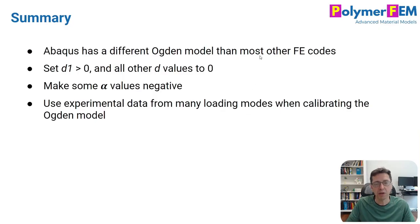To summarize, Abacus is different than the other finite element solvers in how it implements the Ogden model. Typically, I only have one d parameter to be non-zero. That's d1 and that one I set to be zero, simply because that's all the data that I have. Make sure that you have some alpha values to be negative.